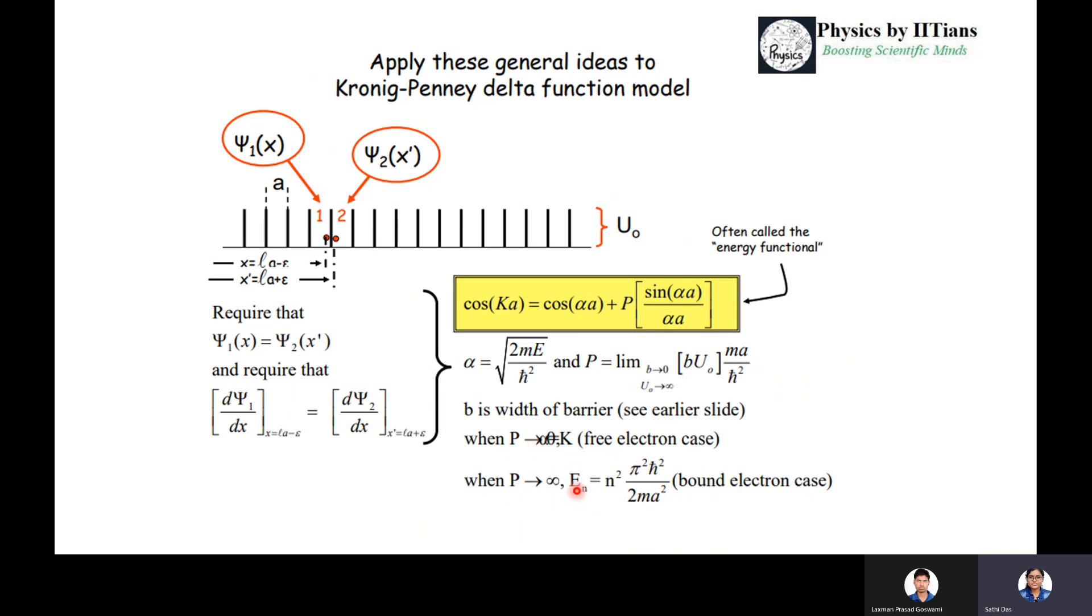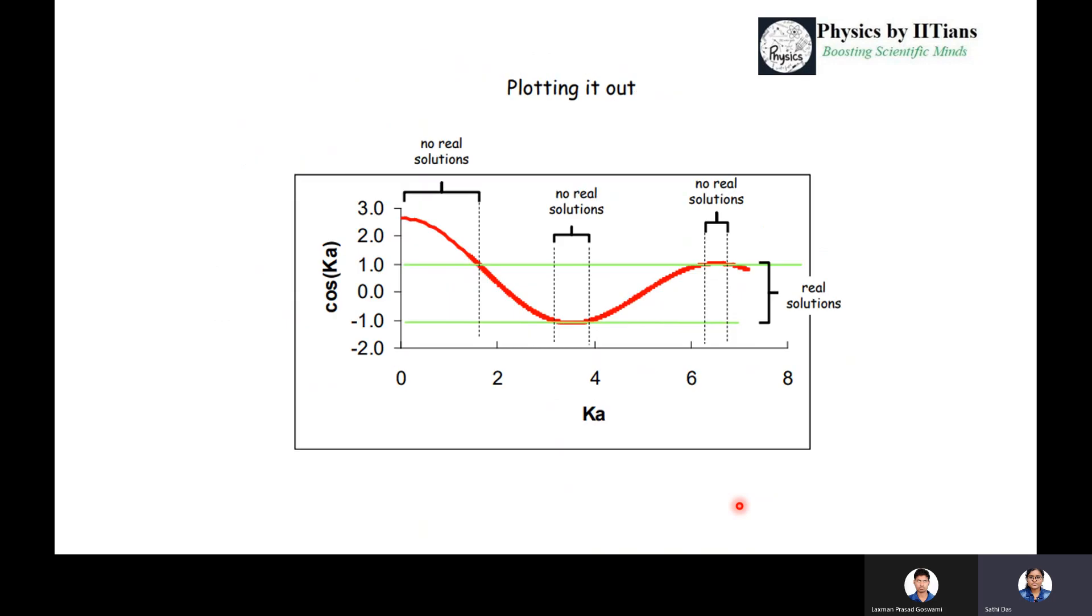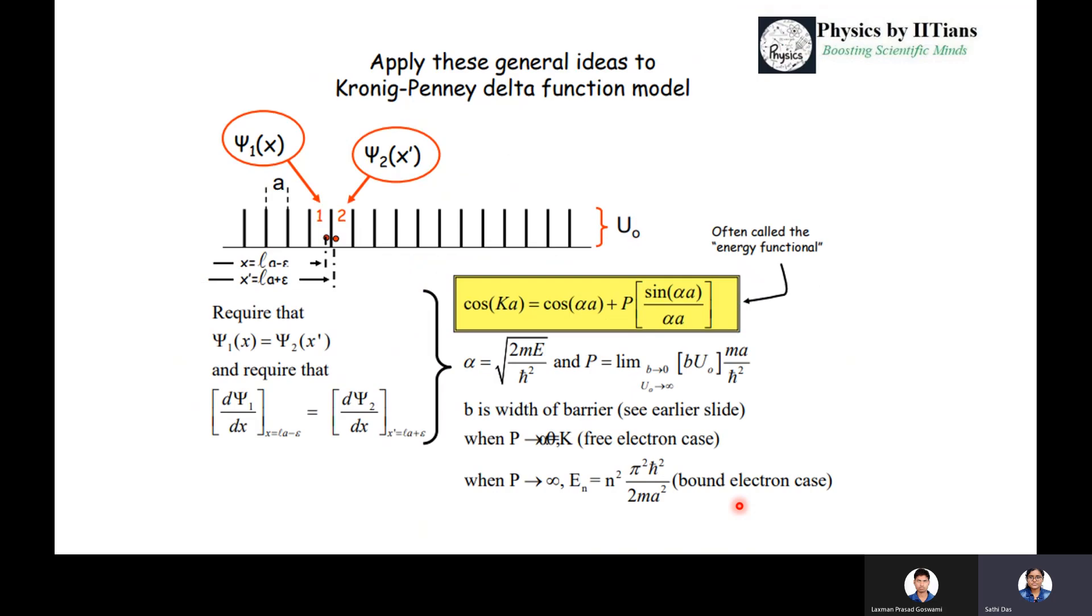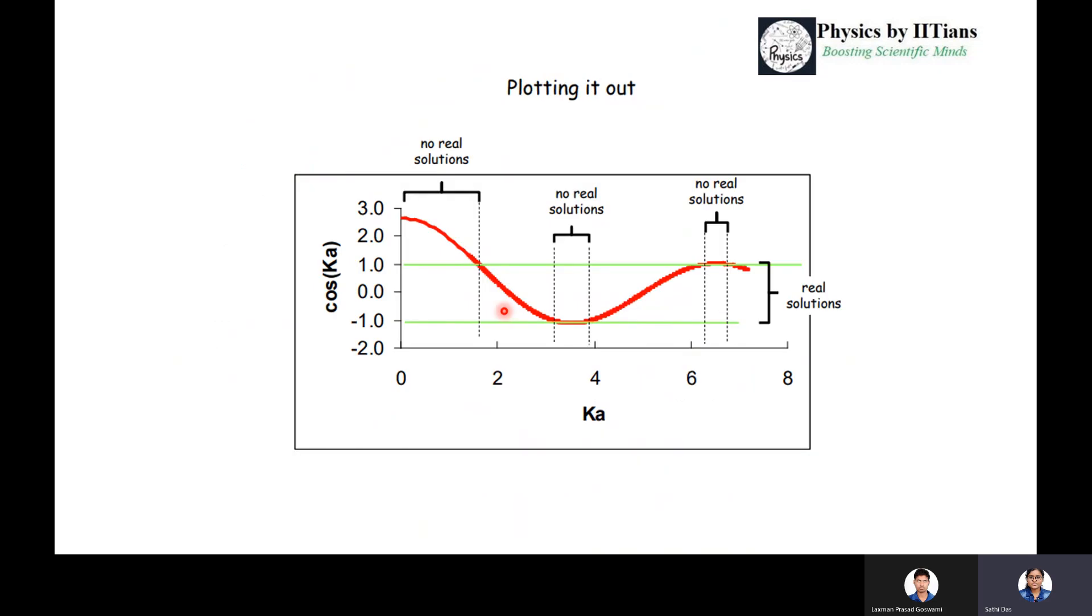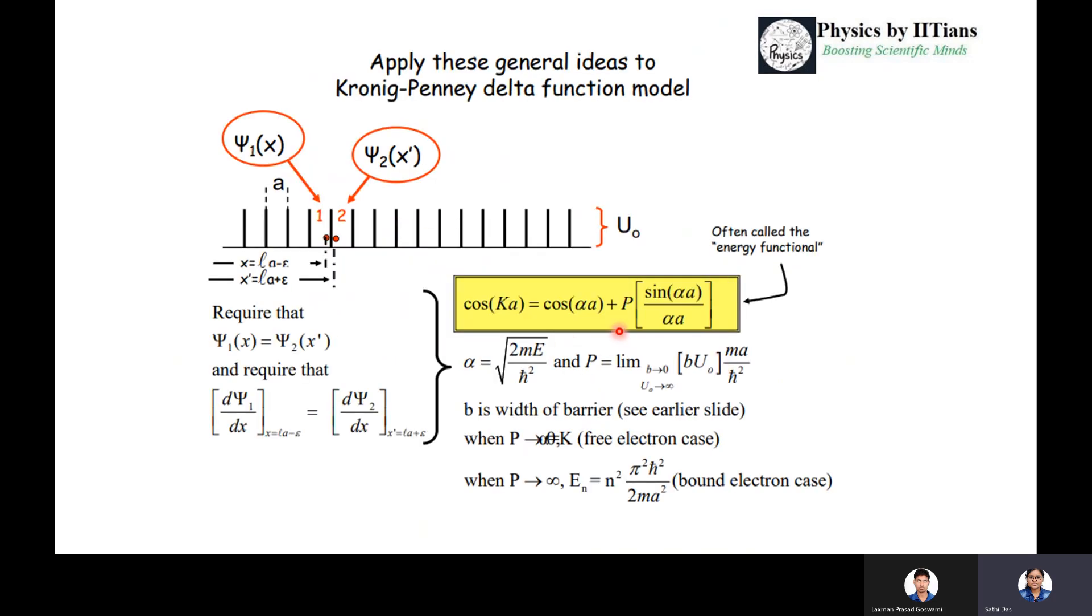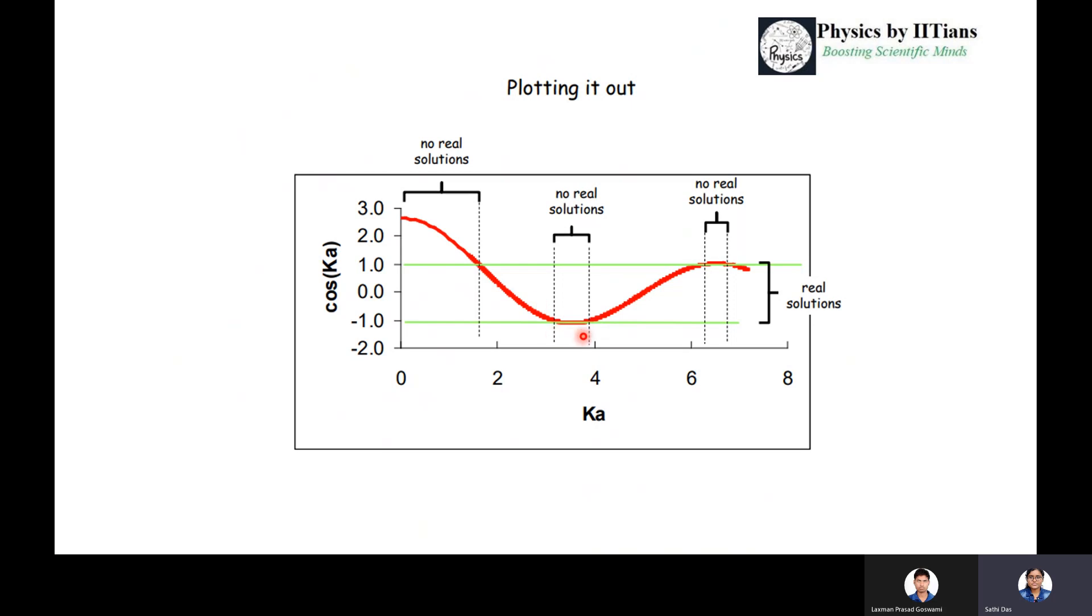When P tends to 0, that is the free electron case. When P tends to infinity, that is the bound electron case. If we plot this equation, the left hand side is cos(Ka). The maximum or minimum value of cos(Ka) is ±1. So the solution should be confined within +1 and -1. All values of the right hand side which are greater than +1 or beyond -1 should be discarded. All values lying within this condition will be the allowed values. All values lying beyond the allowed condition will be forbidden values of the energy. This is how the energy E-K diagram gives you the forbidden and allowed energy values.